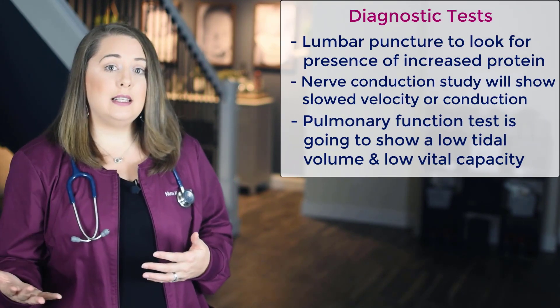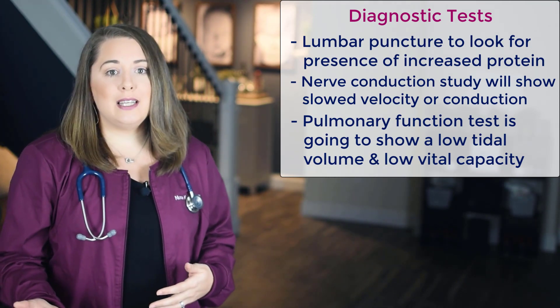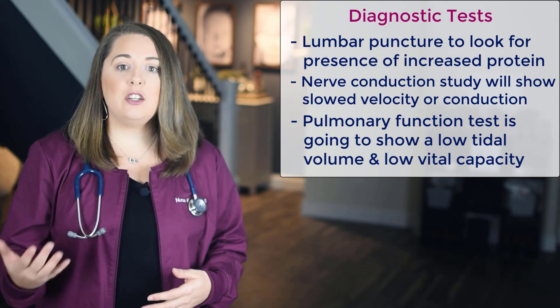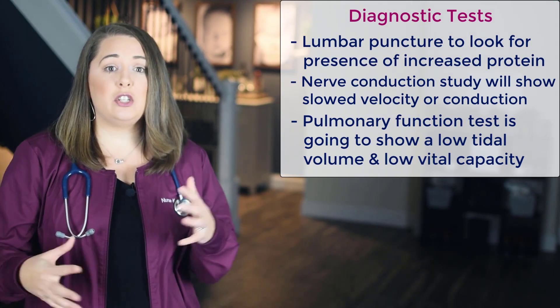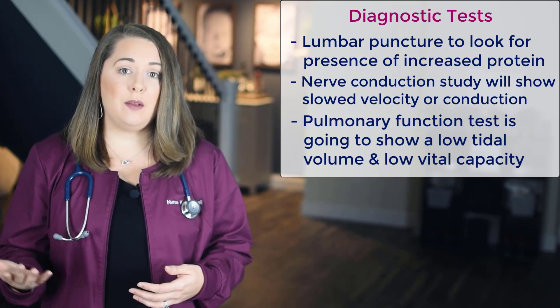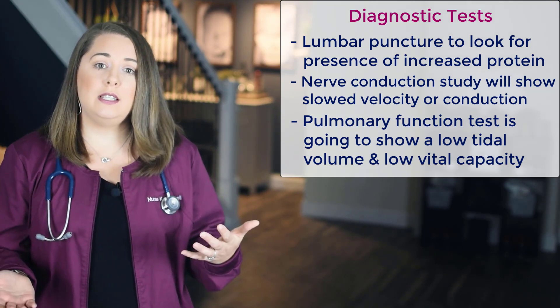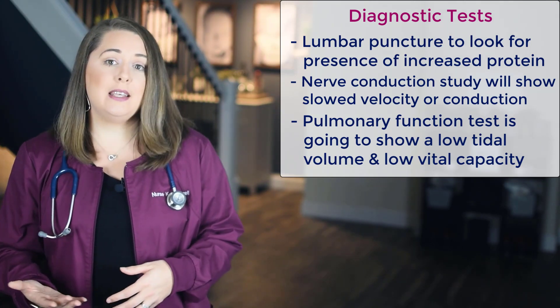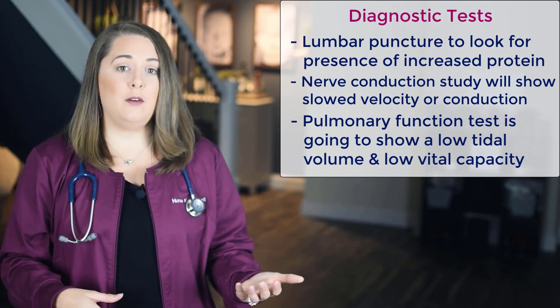The three most common diagnostic tests you will anticipate running are: number one, a lumbar puncture — you're looking for increased protein because the myelin sheath is made up of protein. If the myelin is being destroyed, you'd expect to see elevated protein in the cerebrospinal fluid. It can take up to two weeks to see elevated protein levels after the initial onset of weakness, so this test is not used exclusively to confirm diagnosis — it's combined with the next two tests and the patient's history. The second test is a nerve conduction study, which tests how fast neuron signals travel to the muscle — a positive result for Guillain-Barré will show slowed velocity or conduction.